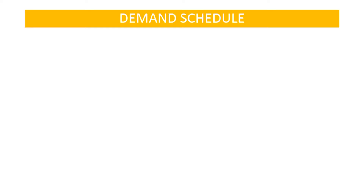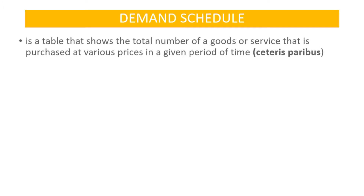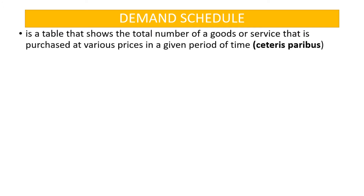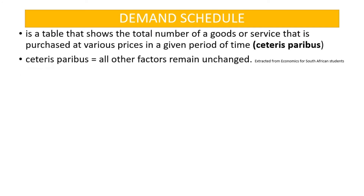Now, what is a demand schedule? A demand schedule is a table that shows the total number of goods or services that is purchased at various prices in a given period of time, ceteris paribus. Ceteris paribus means that all other factors remain unchanged — this is an assumption.